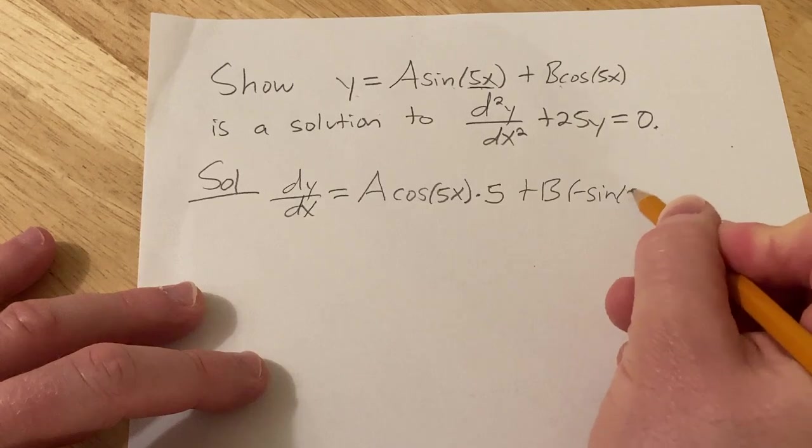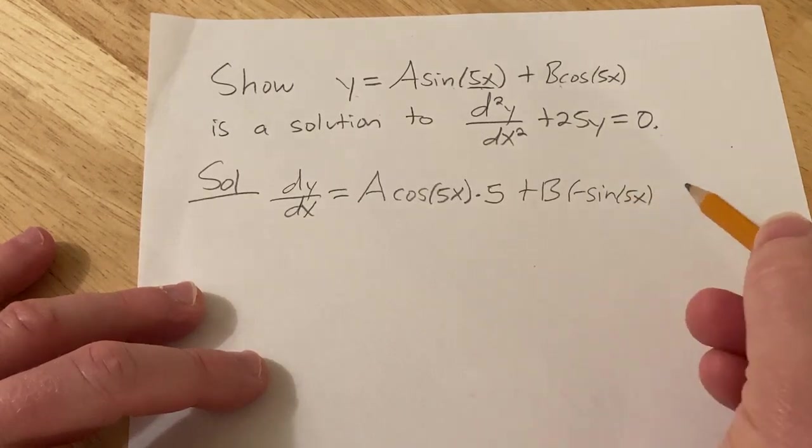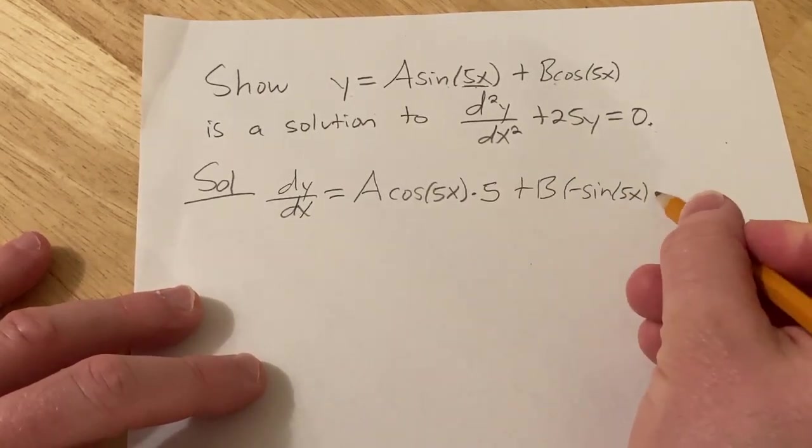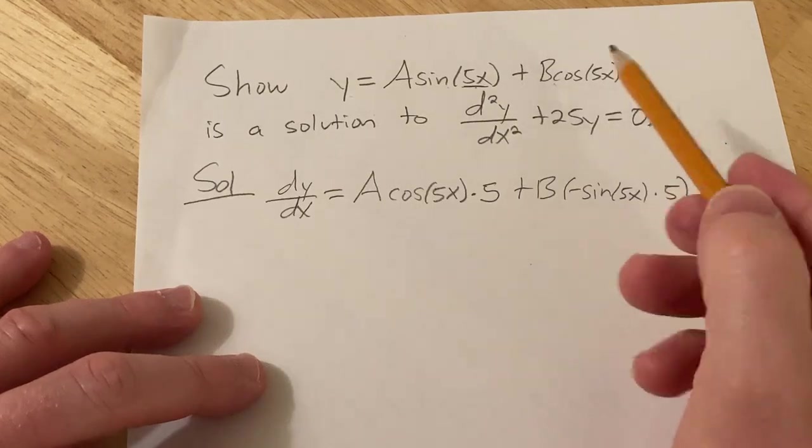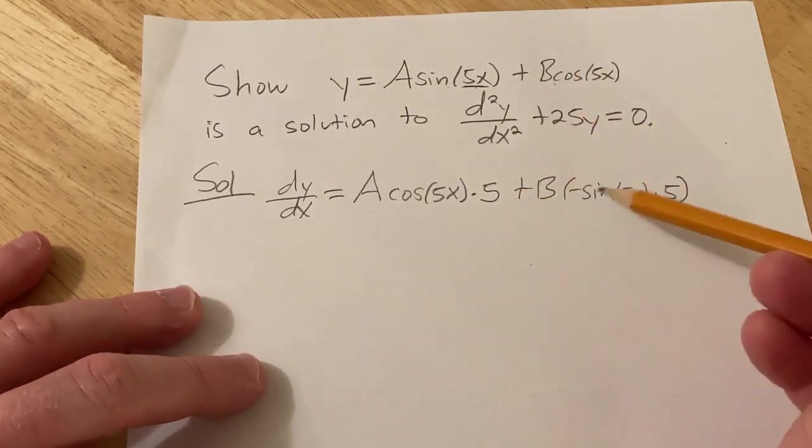The derivative of cosine is negative sine, so negative sine 5x, times the derivative of the inside, which again is 5. So just using the chain rule, you take the derivative of the outside, which is negative sine.